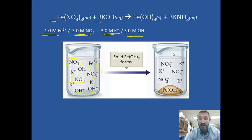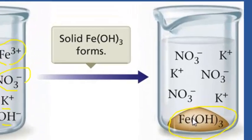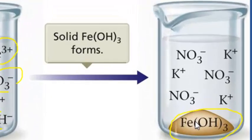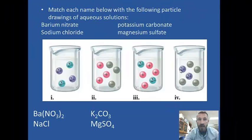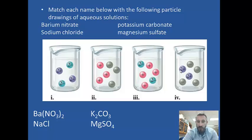In the products, we also see this 1-to-3 ratio. There's 1 iron(III) hydroxide that's a solid, and for every 1 iron(III) hydroxide formed, there are 3 nitrates and 3 potassiums. See if you can match the following substances to the drawings that would be appropriate.